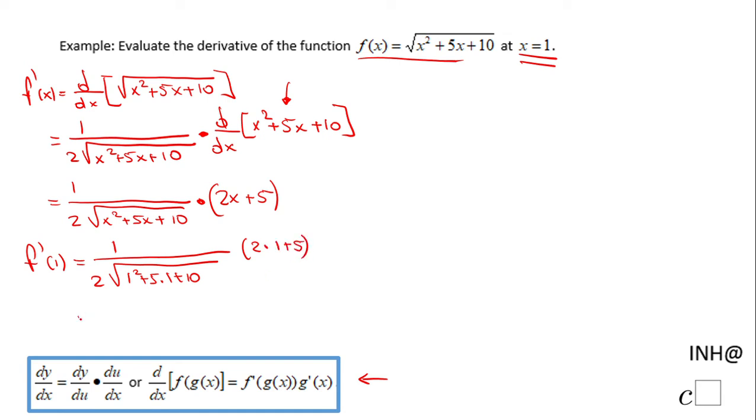And let's see what we get here. We have 1 over 2 times 4. Because if you take a look, 1 squared is 1 plus 5 plus 10, that is 16. The square root of 16 is 4.